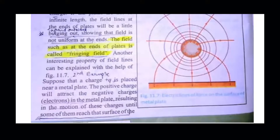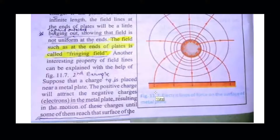Here is the last example for the representation of electric field lines. We take positive charges and bring them near a metallic plate. This is in the field of positive charges. Here are negative charges that are electrons in the metal. When we bring the metal plate into the field of positive charge, the electrons rush towards the positive charge and move in its direction.